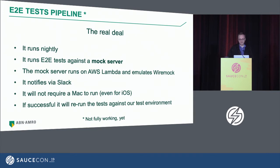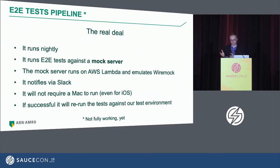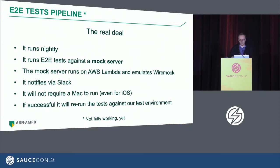We decided to create some code, deploy it on a Lambda that is publicly accessible, and use the same WireMock configuration files on that Lambda. This notifies us via Slack when something goes wrong, and it does not require a Mac to run even for iOS. If everything goes fine, it reruns all the tests against the test environment — a full stack that is a complete replica of our production stack, down from REST services through an enterprise service bus to mainframes.